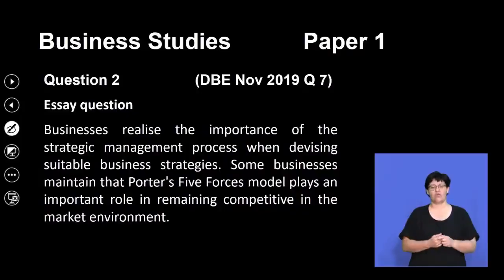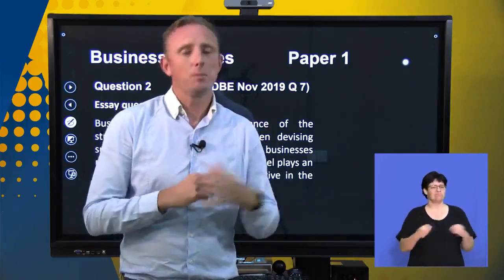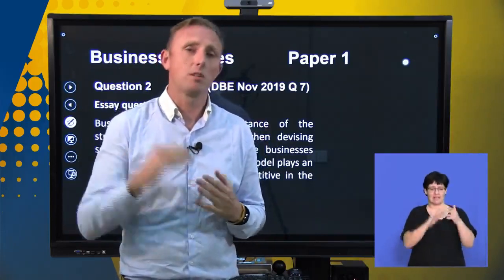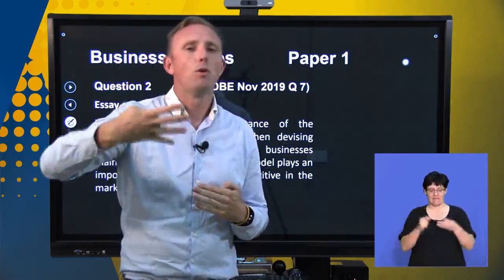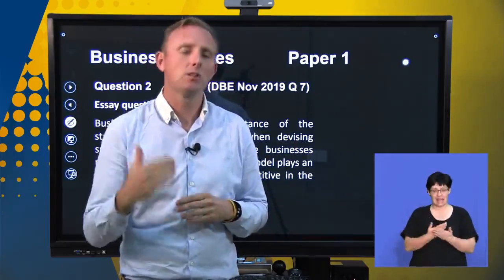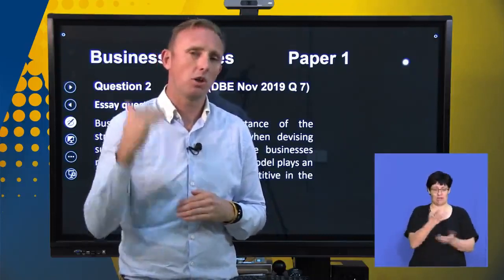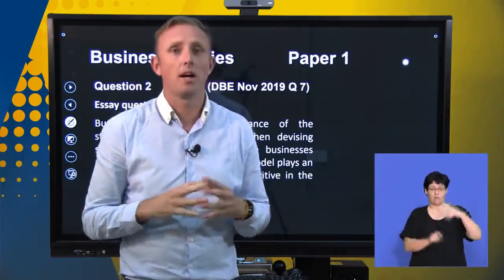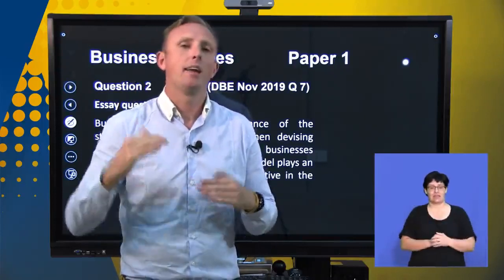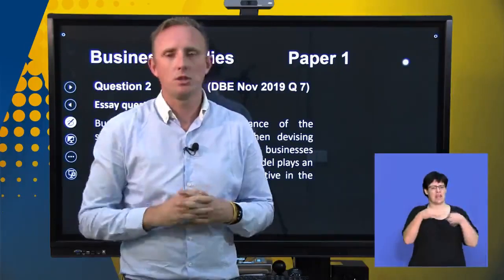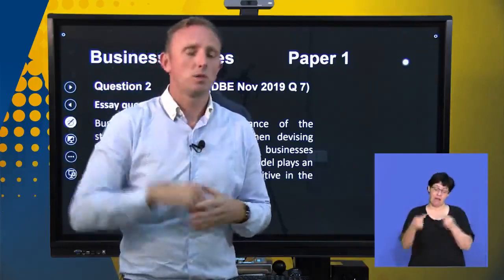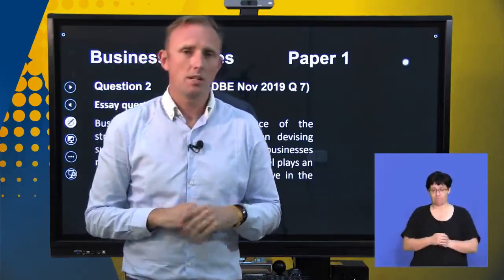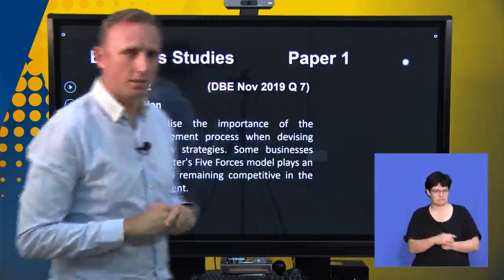We're going to go on to an essay question now. This is your section C question. Every essay will have four sub-questions in it, and each one of those sub-questions could be a potential section B question. We're going to go through the four different questions of this particular essay, and I'll be explaining them to you as if they could also potentially be a section B question.